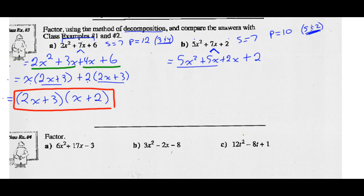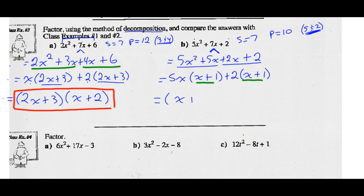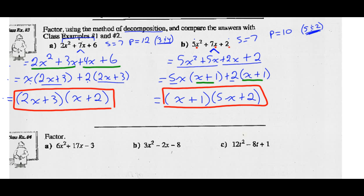Now we factor by grouping. Common factor of the first two terms is 5X: 5X squared divided by 5X is X, and 5X divided by 5X is 1. Common factor of 2X plus 2 is a positive 2: 2X divided by 2 is X, and 2 divided by 2 is 1. Now I notice a common binomial factor of X plus 1. Factor out the X plus 1 and you're left with 5X plus 2. Those are the factors of 5X squared plus 7X plus 2 — same answer as the algebra tiles.